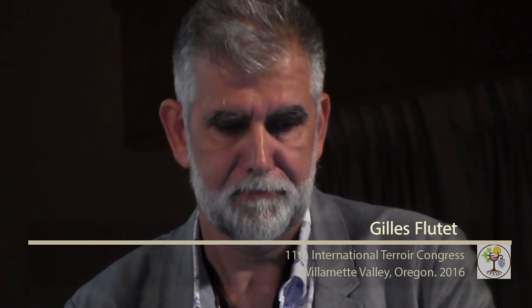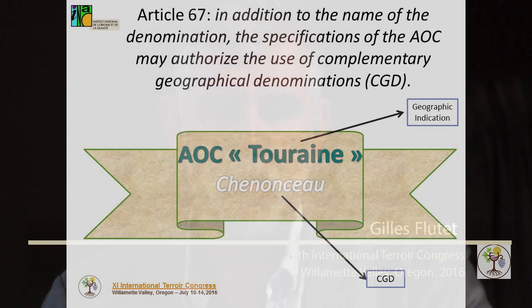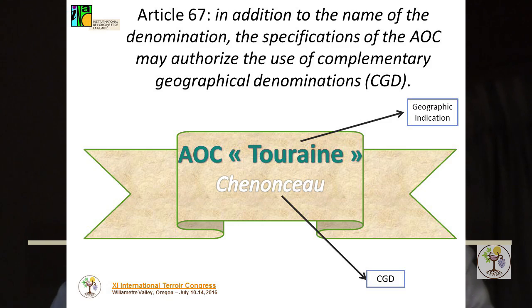In this context, how do we recognize new AOCs? In France, INAO uses Article 67 of the European Regulation on wine. This article gives the possibility to complete the name of an AOC with a smaller geographical name.